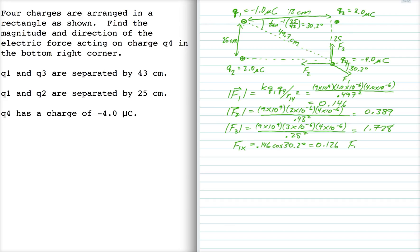And the y component is minus 0.146 sine 30.2, which is minus 0.073. Alright, it's negative. Our sign convention in this diagram, of course, is that up is positive and to the right is positive. That's our normal Cartesian convention.